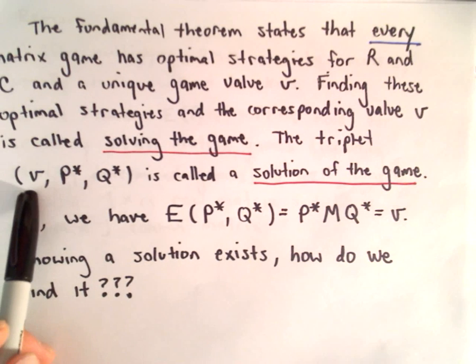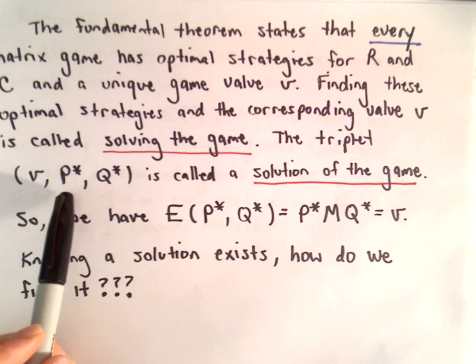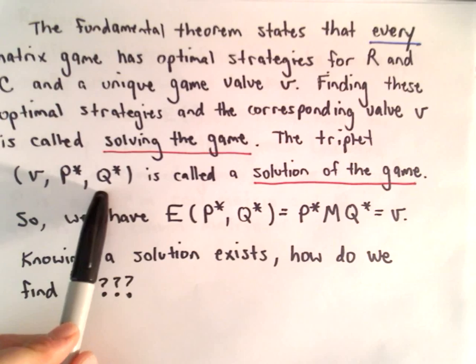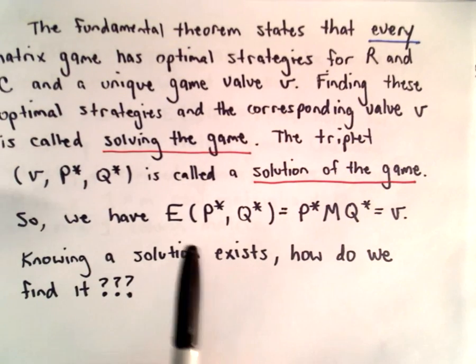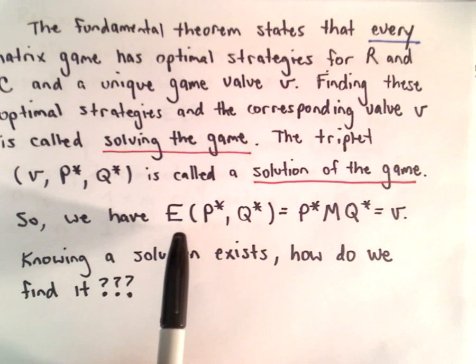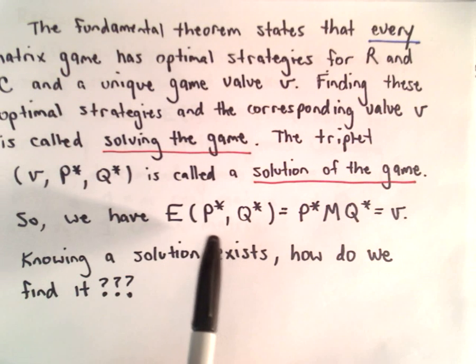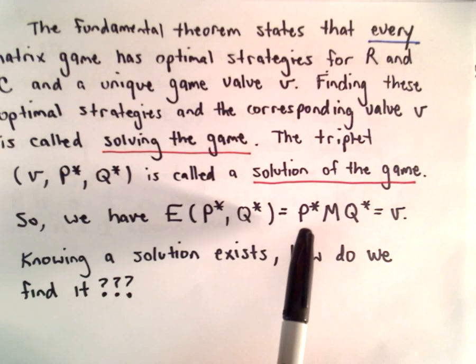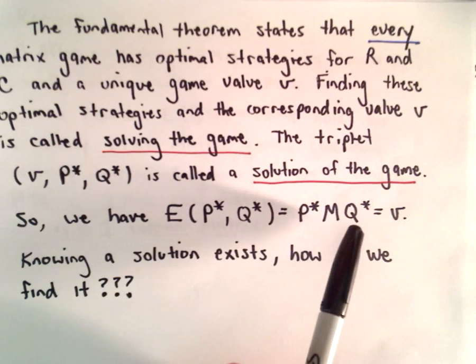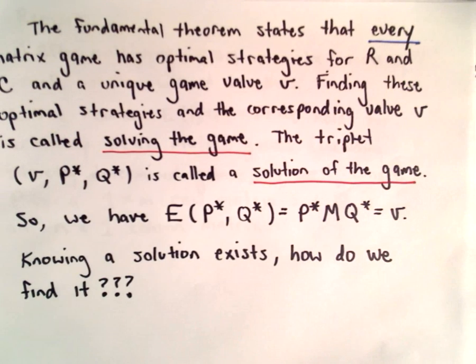So the triplet, so once we know the value V, the strategies P* and Q*, that's called the solution of the game. So again, using the notation we had earlier, it says the expected value using these strategies P* and Q*, well to compute that, again, we saw at the very beginning, we could just take P* multiply by M, multiply by Q*, and that'll give us V.